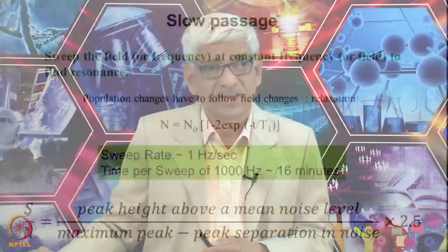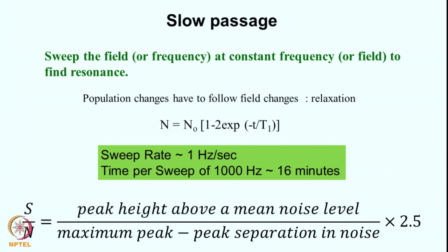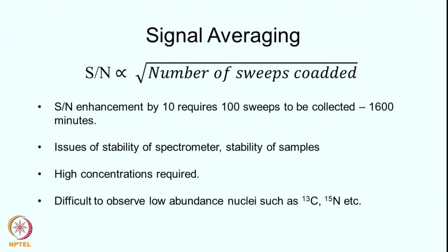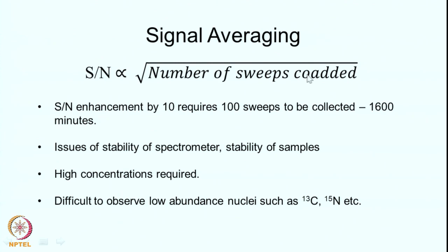To increase the signal-to-noise ratio, you can use signal averaging — sweep the spectrum several times and add them together. The signal adds as the number of scans, whereas the noise adds by the square root of the number of scans. Therefore the signal-to-noise ratio goes as the square root of the number of sweeps co-added. To enhance signal-to-noise by a factor of 10, you need 100 sweeps — at 16 minutes per scan, that is 1600 minutes.